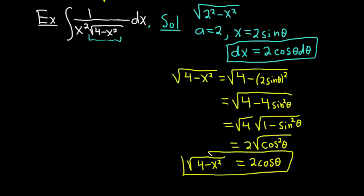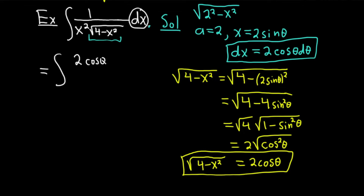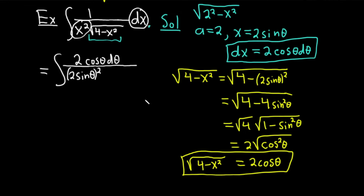Now we're ready to make the substitution. The integral becomes: 2 cosine theta d theta in the numerator, over x squared — which is (2 sine theta) squared — times the square root piece, which is (2 cosine theta). We've replaced dx, x squared, and the square root. Notice how we did each little piece carefully: identify the formula, make the substitution, compute dx, work out the square root piece, and plug everything back in.